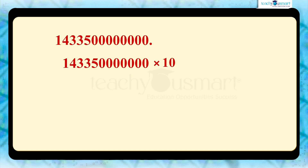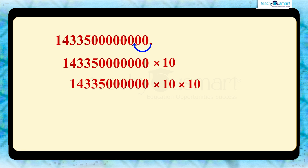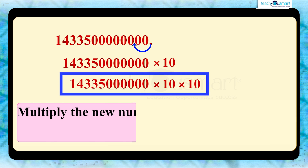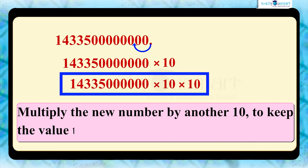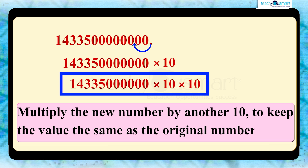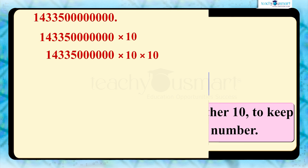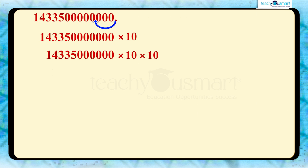Again, let's move the decimal point one more place to the left. The new number gets smaller by another factor of 10. Hence, to keep the value of the new number the same as the original, we need to multiply the new number by another 10. We can continue like this until there is only one digit to the left of the decimal point.